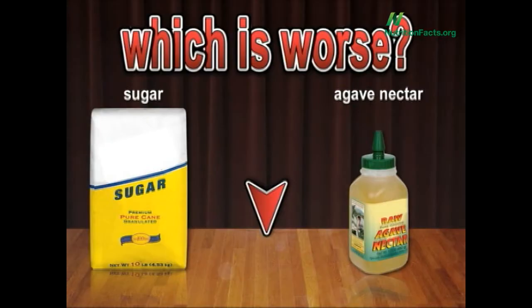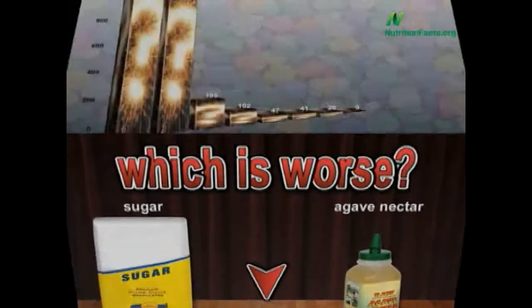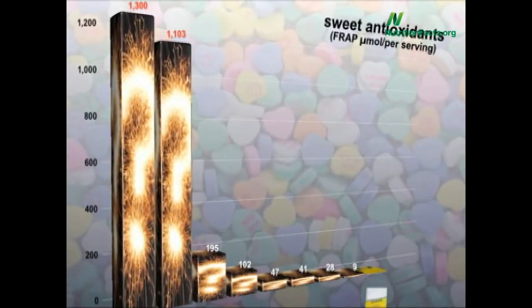Remember how I asked if we should start out with an easy one? Well, I guess the answer is no. They both have exactly the same nutrition, which is to say, basically none. Sugar is here, agave is here, each with a completely pitiful two-millionth of a mole of plasma ferric acid reducing ability, which is essentially zero antioxidant power.